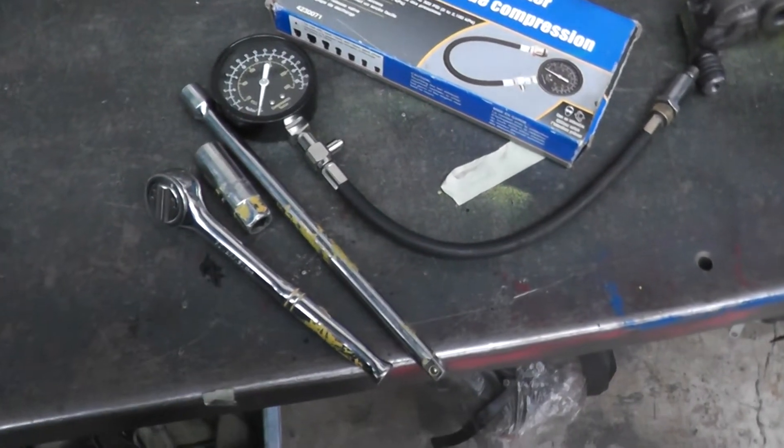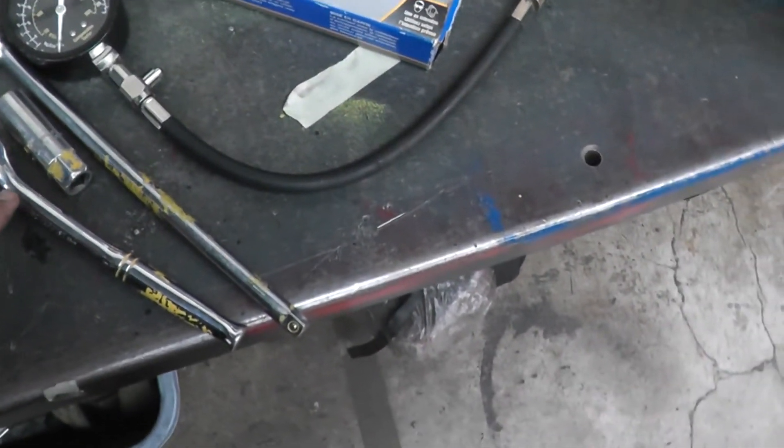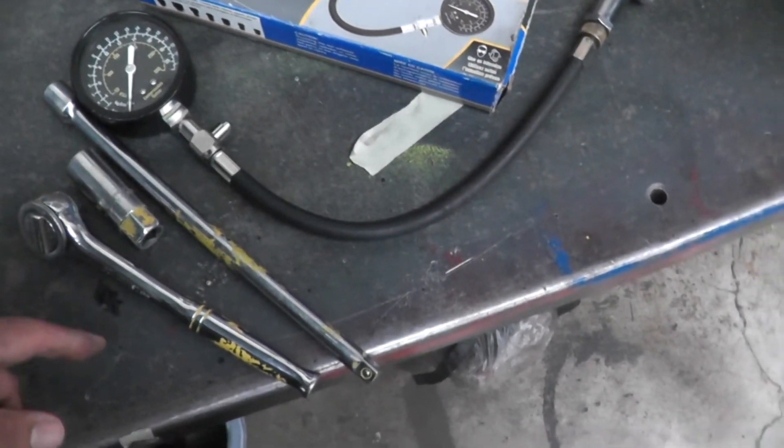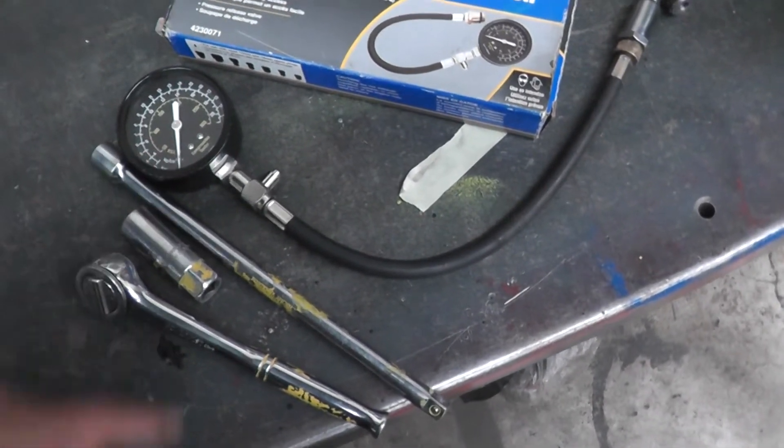To perform a compression test, we will need a ratchet, spark plug socket, extension on some cars, and compression gauge, obviously.